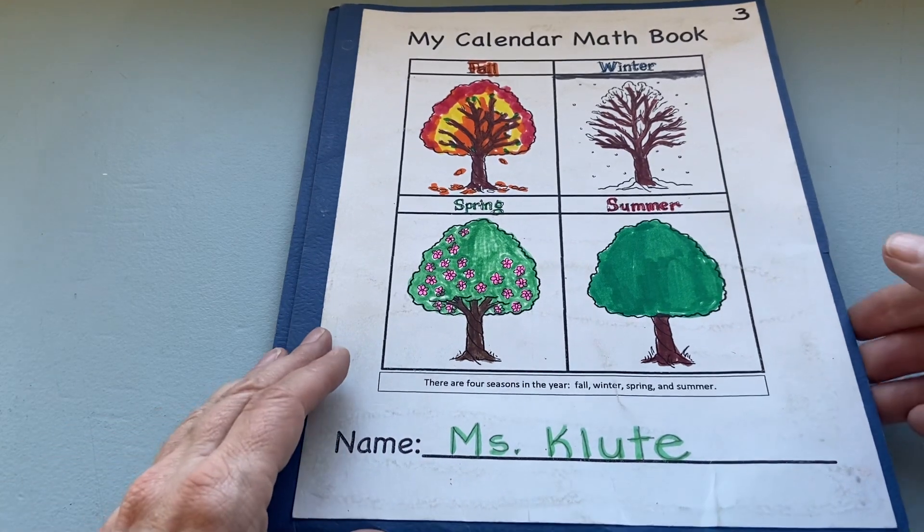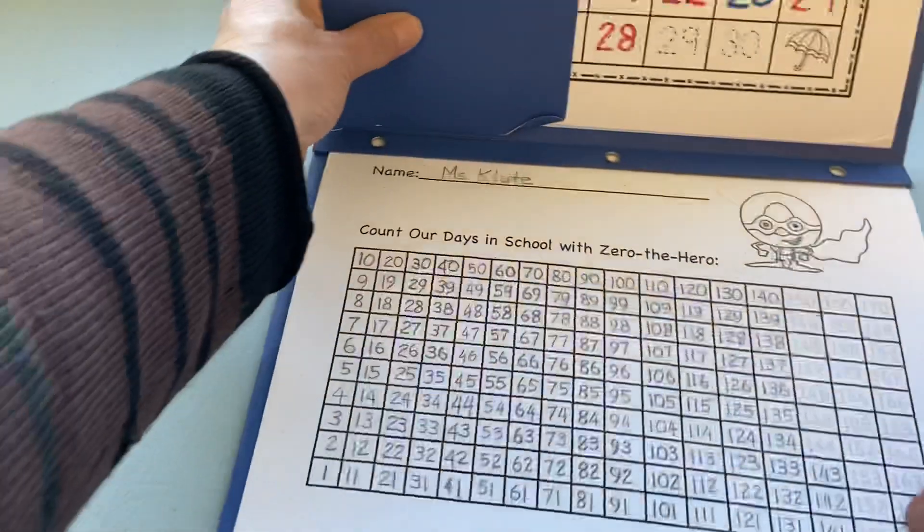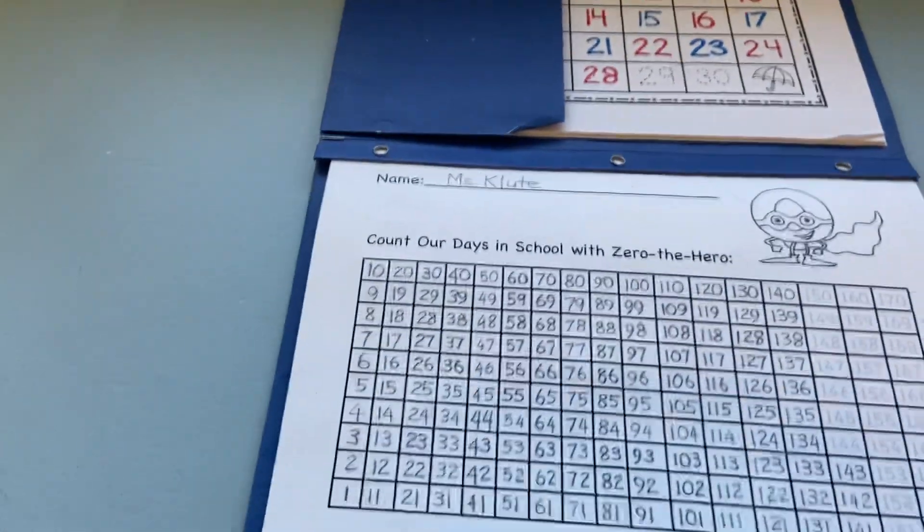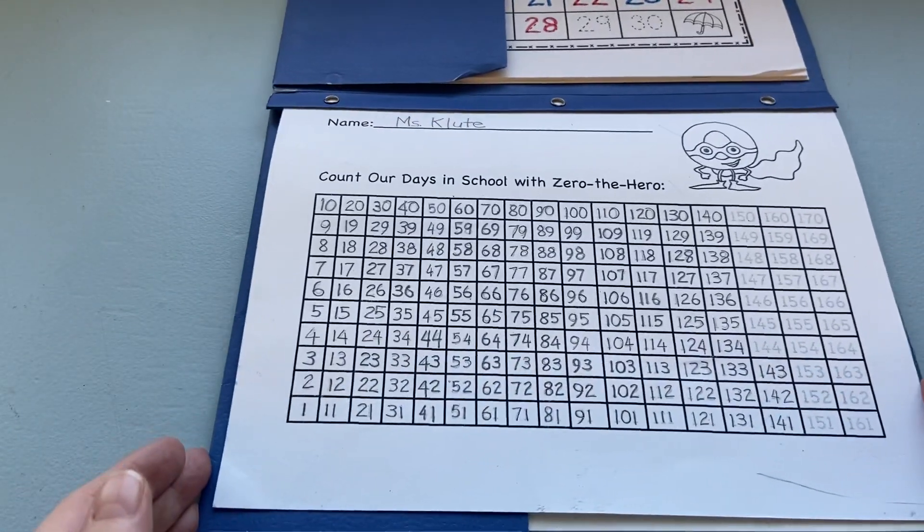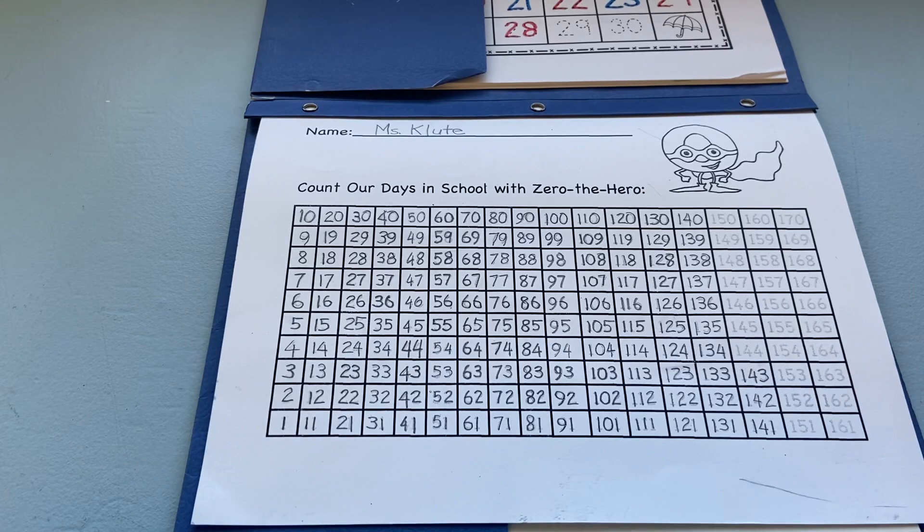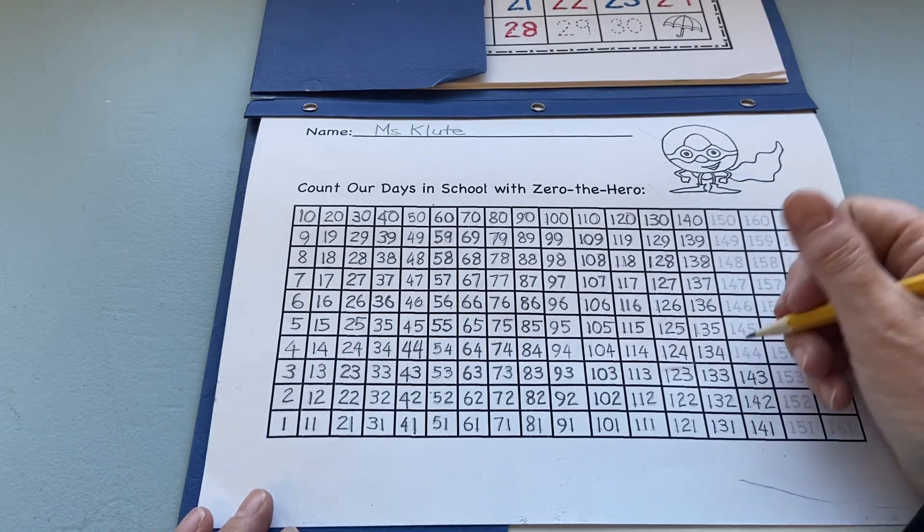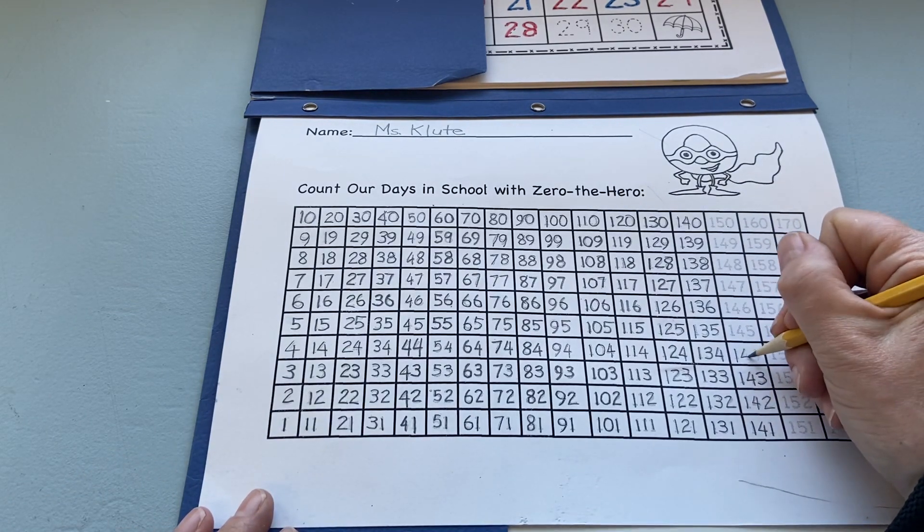Okay, so today we have to fill in our zero-to-hero chart, so we're going to move up to our next number. Go ahead and get your pencil. You're going to write 144.